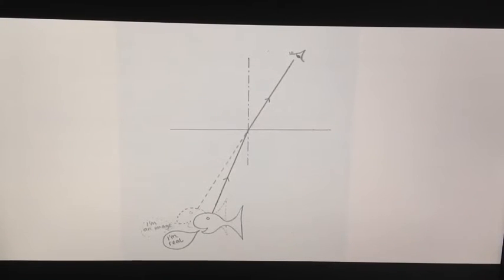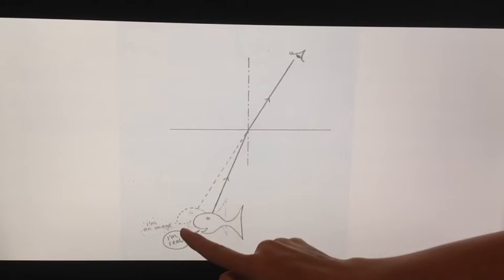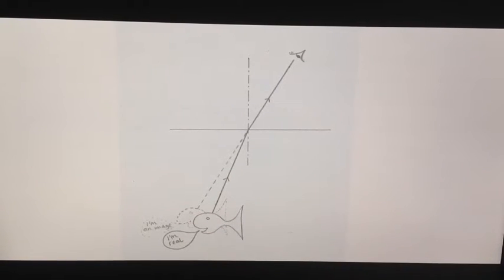So although this fish is really here, it appears to us as though the fish is here. And that means that when you try and spear it you're too high and you miss. With practice you can learn to compensate for refraction and aim lower than the fish. And that way you might hit your target.